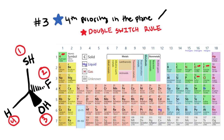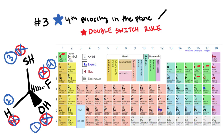When the fourth priority group is in the plane, we use the double switch rule. Put the fourth priority group in the dash position by switching 4 and 2. Then switch 1 and 3 to ensure the absolute configuration isn't changed. Now the fourth priority group is in the back, so going 1, 2, 3, it is moving clockwise, meaning the absolute configuration is R — and we don't have to switch it again.